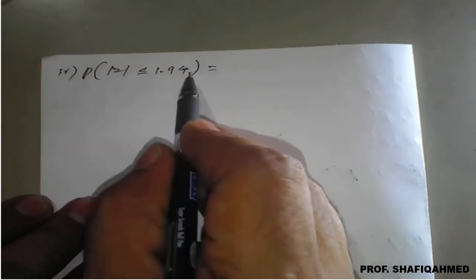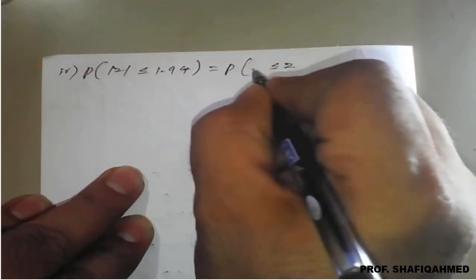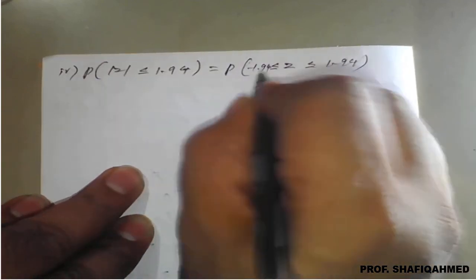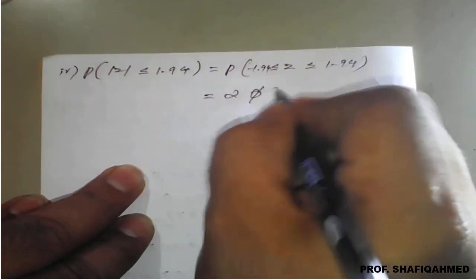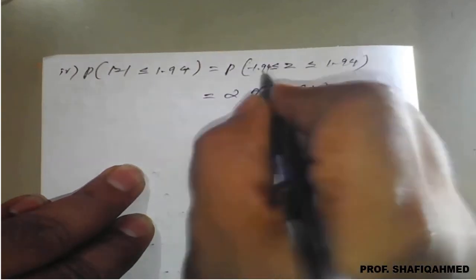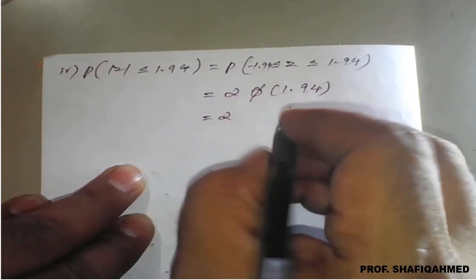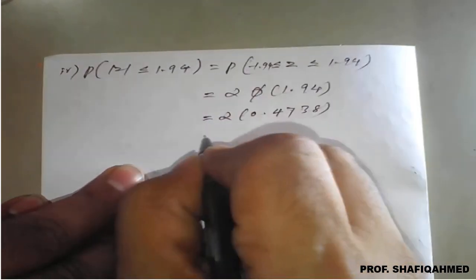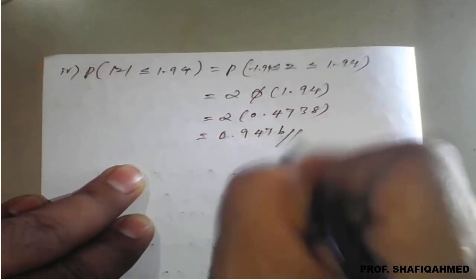Fourth question: P(|Z| ≤ 1.94). The modulus expands to P(-1.94 ≤ Z ≤ 1.94). Since both values are equal in magnitude with opposite signs, we can write this directly as 2 times phi(1.94). From the calculator, phi(1.94) equals 0.4738. So the answer is 2 times 0.4738 equals 0.9476.